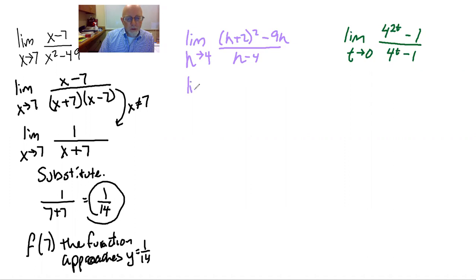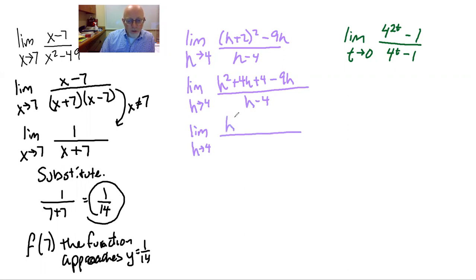In this case, I'm going to decide to expand the numerator and see what happens. I'm hoping. There's a lot of hoping here. So expanding the numerator gets us this. And then we can combine like terms in the numerator. Notice I'm writing the limit as h approaches four each time. That's a good calculus habit.